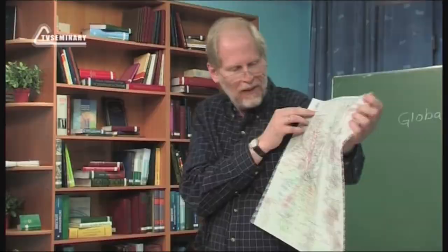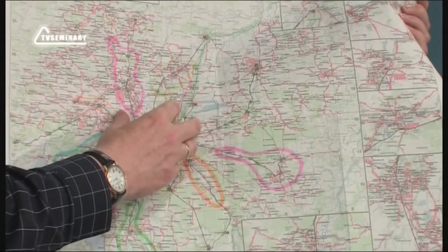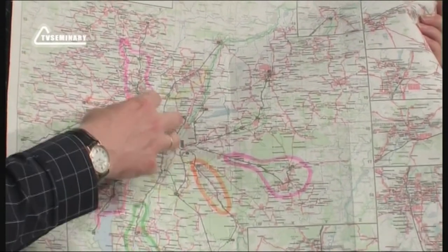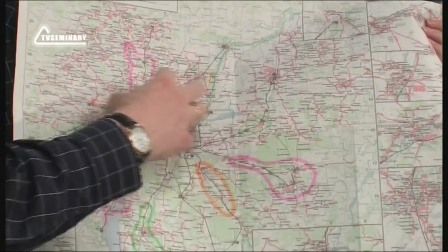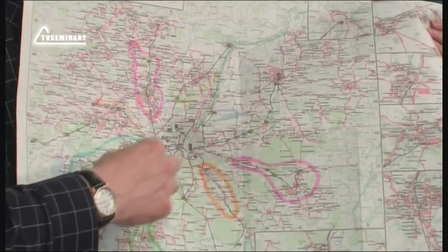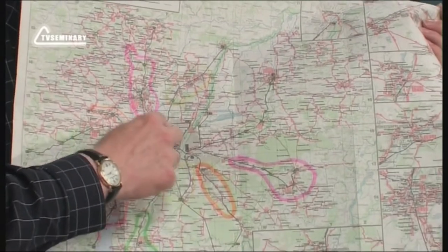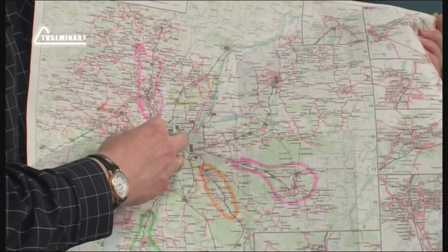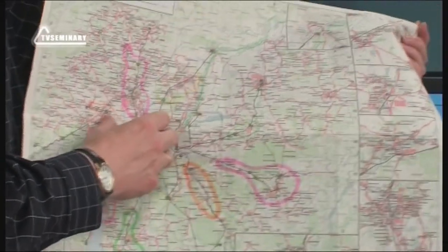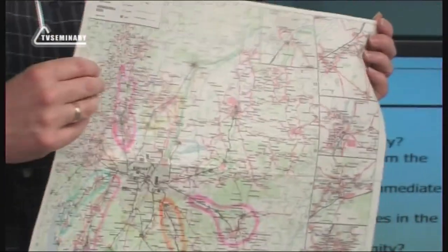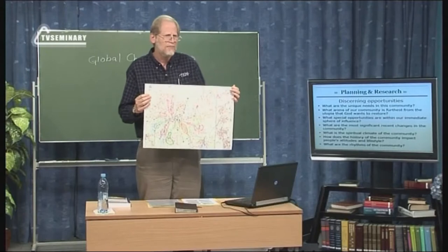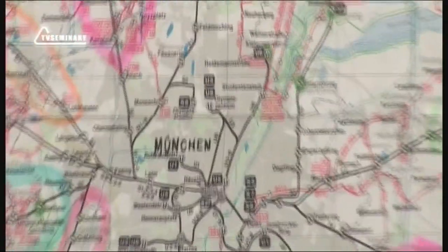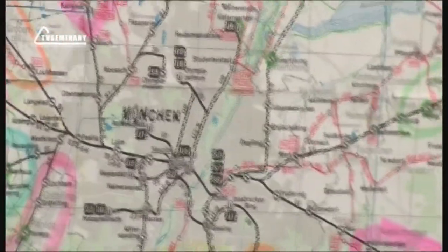Another thing we knew is that as the city grew, it would sort of swallow up little towns, and they would become incorporated into the city. Some of these towns that are technically part of the city of Munich kind of have their own local character. And so those are the kind of communities where you say it probably just needs its own church, because it has its own community character.